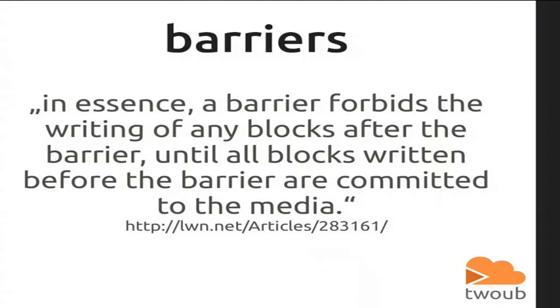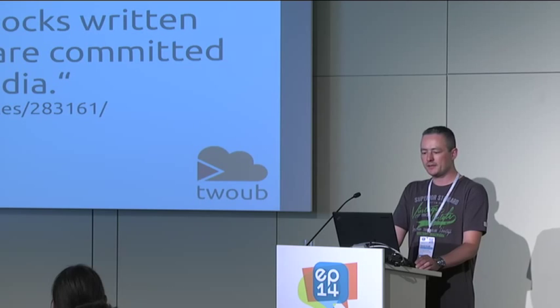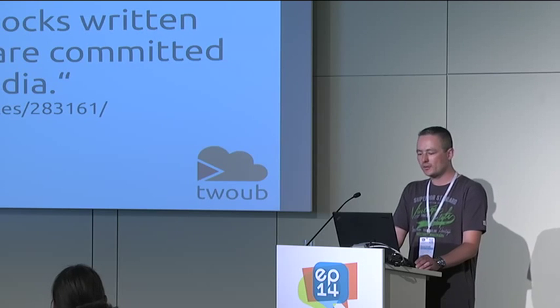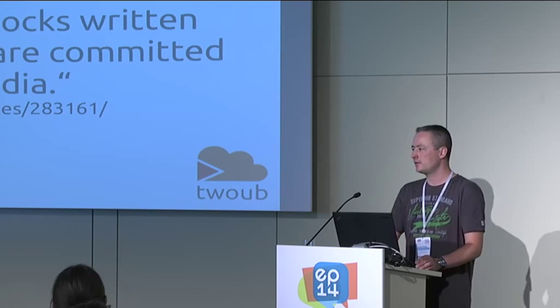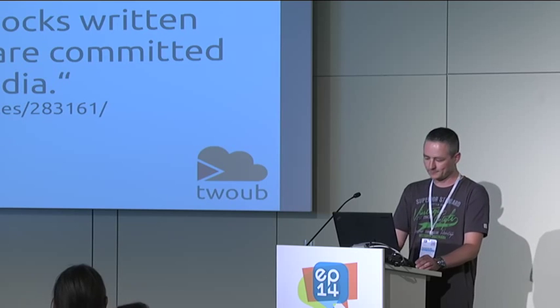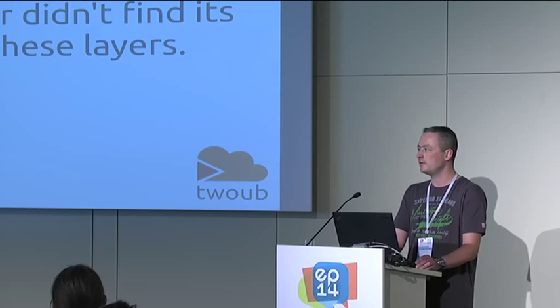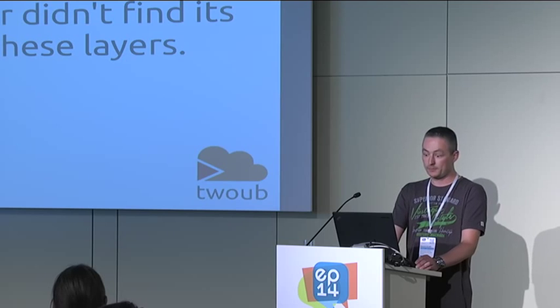There's a thing in the Linux I/O stack called barriers — copied from an LWN article. A barrier forbids writing any blocks after the barrier until all blocks written before the barrier are committed to the media. That makes sure the journal of the file system is consistent. It looks like the barrier didn't find its way through these layers — some point in this stack, after debugging, didn't work with barriers.